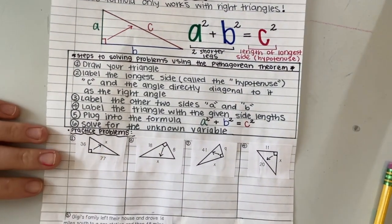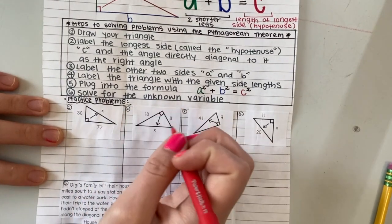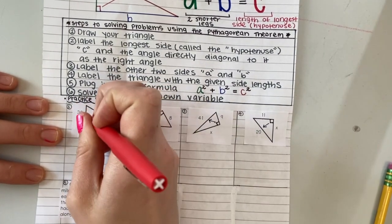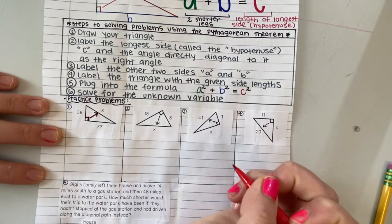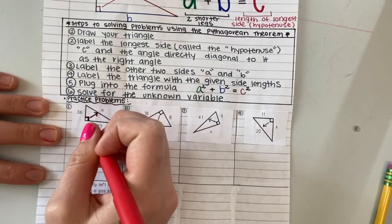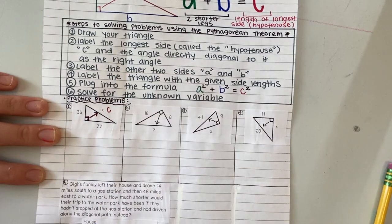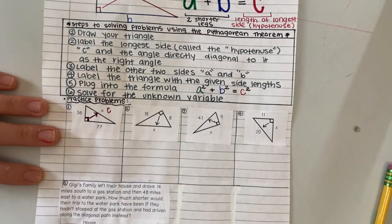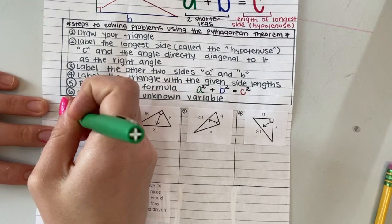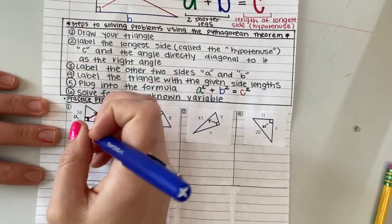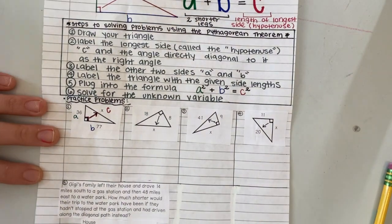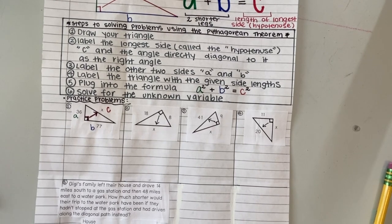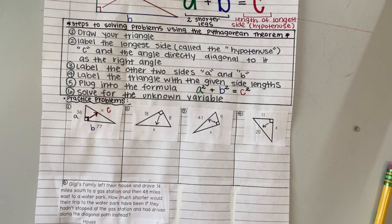So what I'm going to do is look at these first two examples. I know my right angle is right here, so I know that the side that's diagonal from it, the one that's not directly touching it, is going to be my hypotenuse, so it's going to be my letter C. Then I need to label the other two sides A and B. It does not matter which one you label which; your answer will still be the same. The only side that is super important that you get correct is the hypotenuse, so the longest side always has to be C.